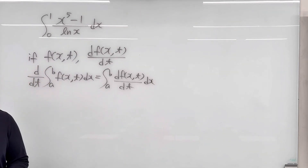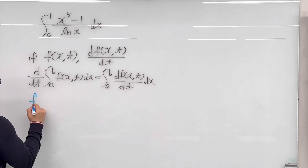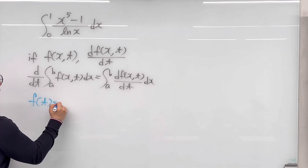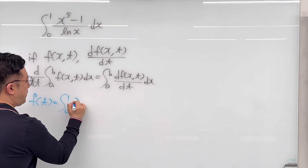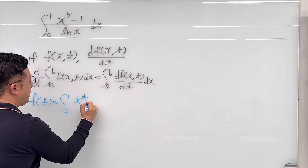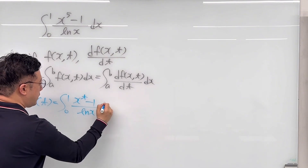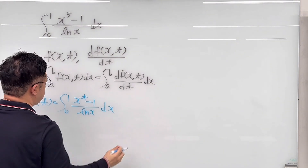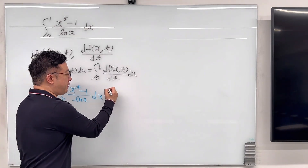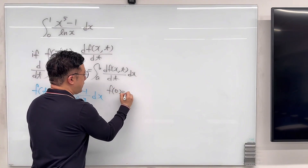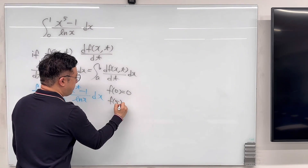So we can create f of t as the integral from 0 to 1 of x to the power of t minus 1 over ln of x, dx. And from this, we already know f of 0 is equal to 0. What we need is f of 5.